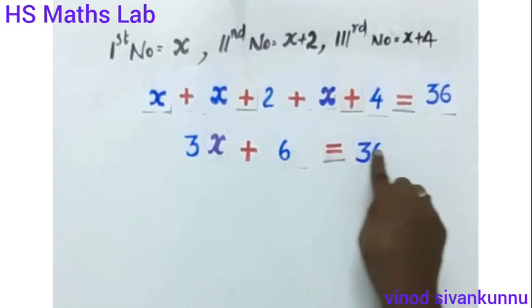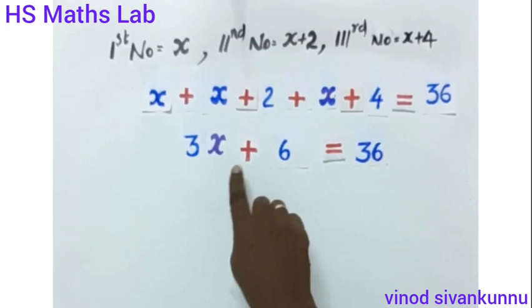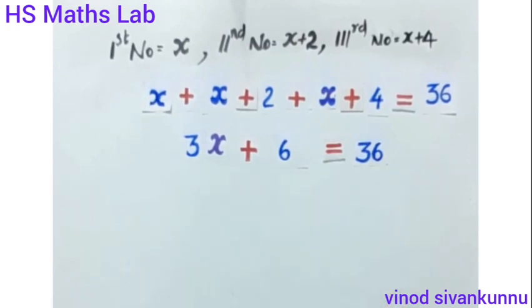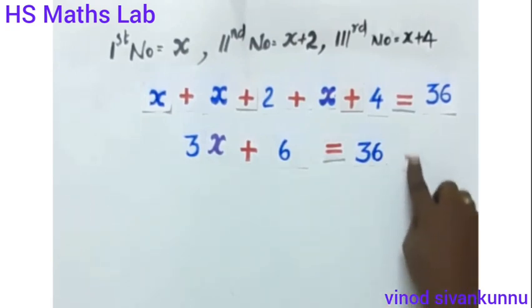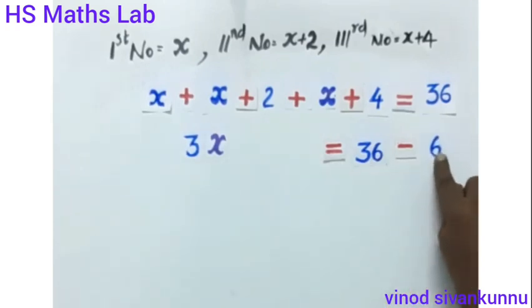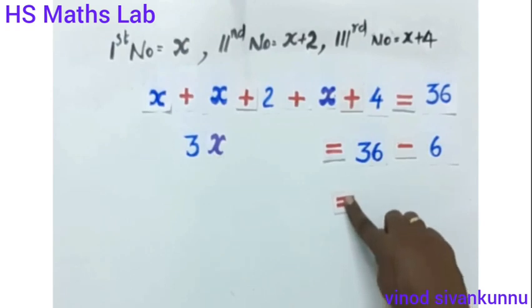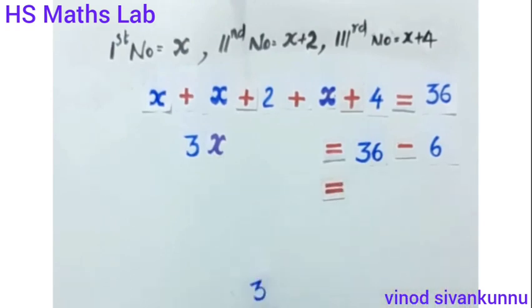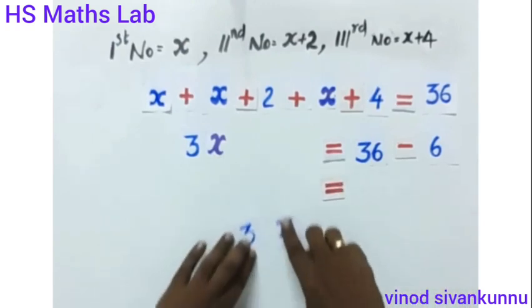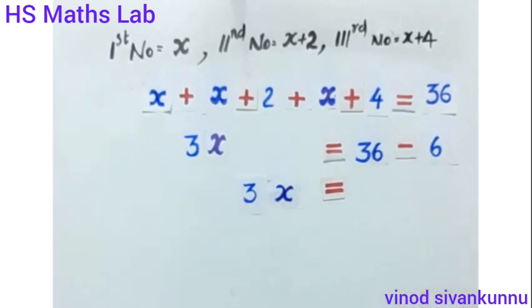So the equation is: 3x plus 6 equals 36. Subtracting 6 from the right side: 3x equals 36 minus 6, which equals 30.